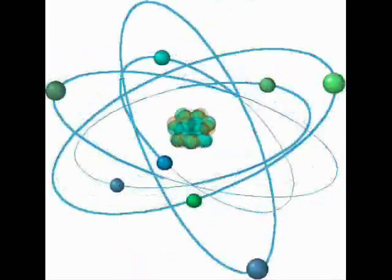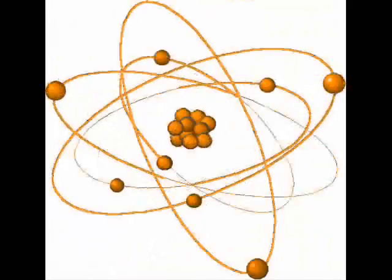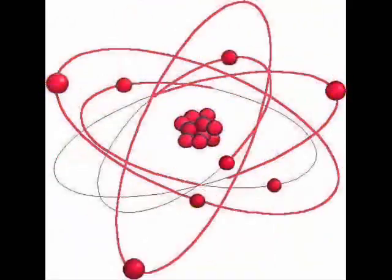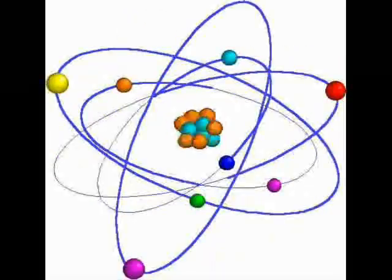An atom is classified according to the number of protons and neutrons in its nucleus. The number of protons determines the chemical element, and the number of neutrons determines the isotope of the element.